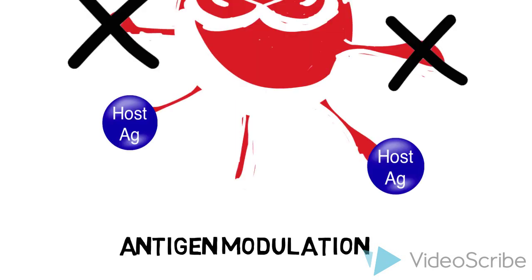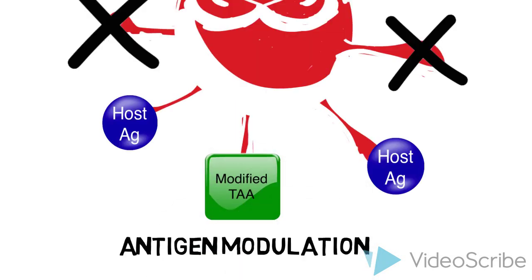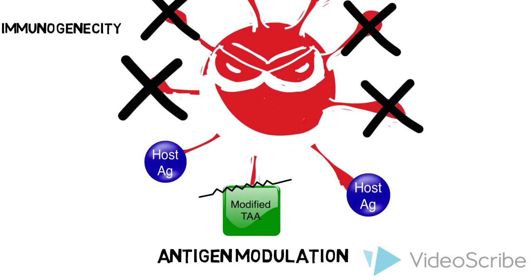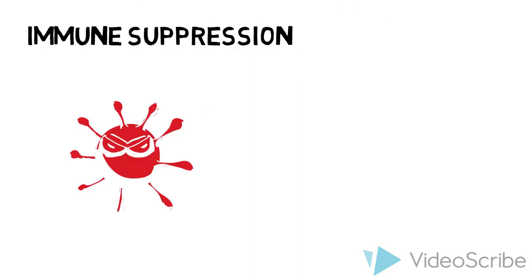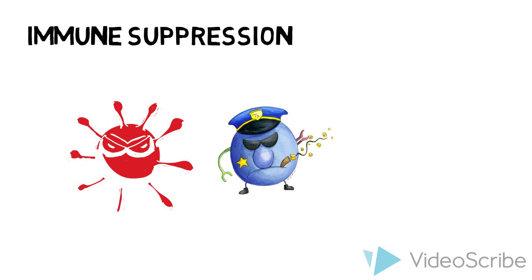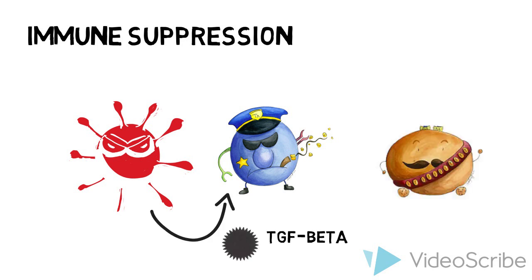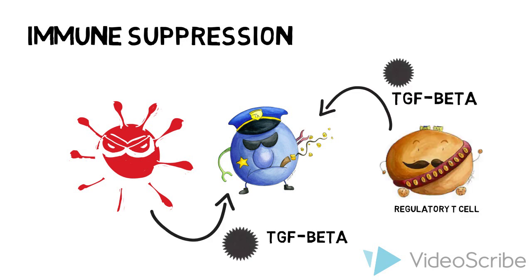Secondly, antigen modulation, where the tumor antigen is modified so that it cannot be loaded onto MHC class 1 to be recognized by the immune system. Thirdly, immunosuppression by tumor cells or regulatory T cells: tumor and regulatory T cells can release immunosuppressants like TGF-beta that block the activation of host T cells.